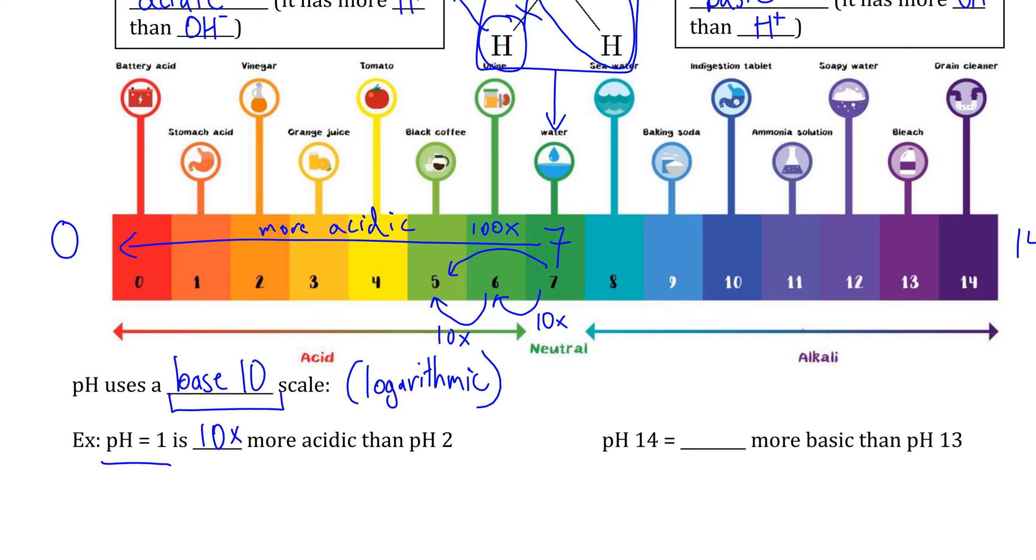This is also true with bases, but we need to remember that as we go from a pH of 7 to a pH of 14, we are getting more basic rather than less basic. The acidity increases as we go down the pH scale, and the basicity increases as we go up. Therefore, a pH of 14 is 10 times more basic than a pH of 13 would be.